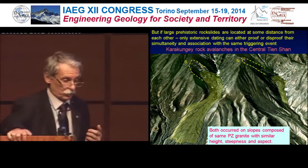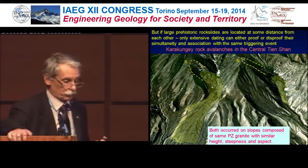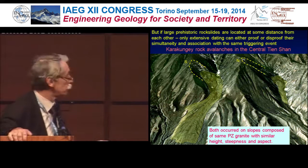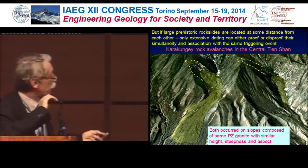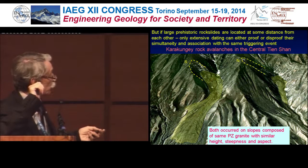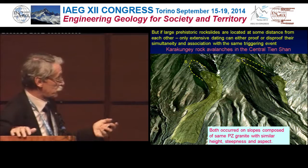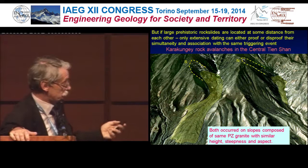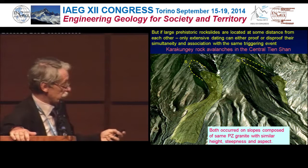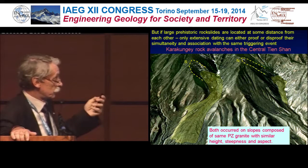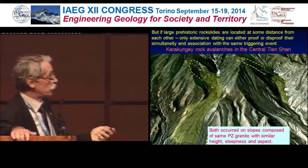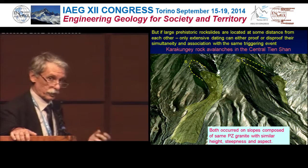But if large prehistoric rock slides are located at some distance from each other, only extensive dating could provide additional information that can prove or disprove their simultaneity. The Karakungi rock avalanches in central Tianshan offer an example: we have two headscarves and two rock avalanche bodies, both on slopes composed of the same Paleozoic granite with similar height, steepness, and aspect. Nevertheless they are separated, and there is one more older event, and we need a lot of dating of this material to prove or disprove their time of origin.